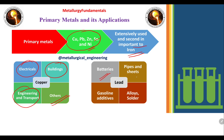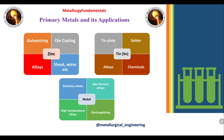The second primary metal is lead, which is most commonly used in batteries, pipes and sheets, gasoline additives, alloys, and solder. Next is zinc, which is mostly used for galvanizing, die casting, alloying, and sheet and wires. The next metal is tin, used for tin plate, soldering, alloying, and chemicals.